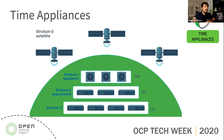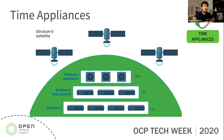GPS, GLONASS, Galileo, Baidu, or any other GNSS constellation is responsible for the true time. Stratum one basically receives this time via a GPS or GNSS receiver and then serves it over the network — either via NTP or PTP.